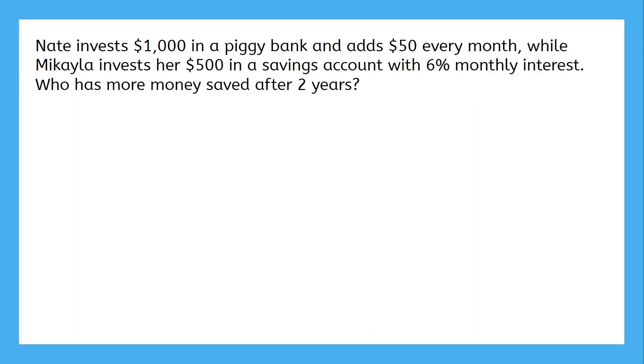Nate invests $1,000 in a piggy bank and adds $50 to it every month, while Michaela invests her $500 in a savings account with 6% monthly interest. Who has more money saved after two years? So, Nate starts with $1,000 and adds $50 to it every month, and Michaela only invests $500 but receives 6% interest every month. So, just like last time, we're comparing a linear function to an exponential function. Does this mean Michaela's exponential savings account automatically wins?